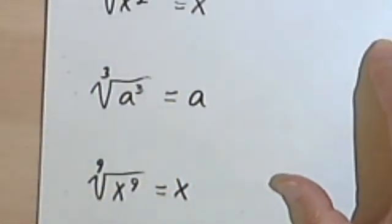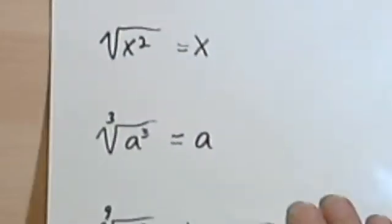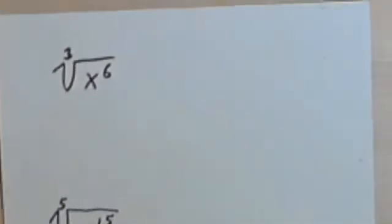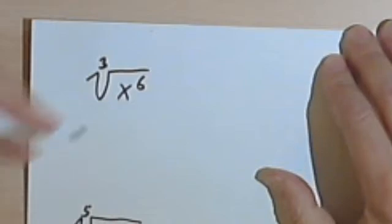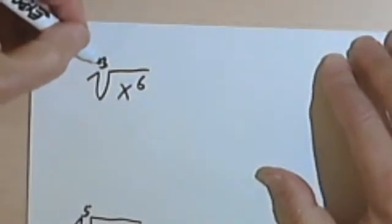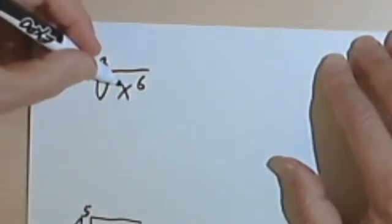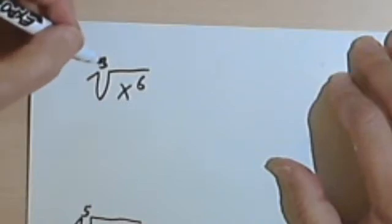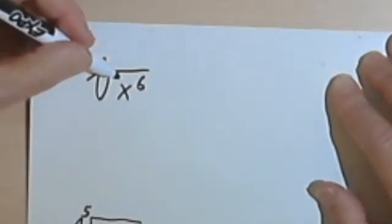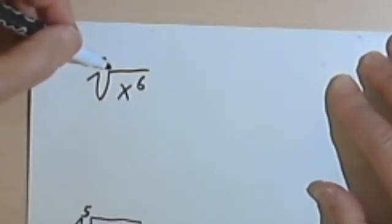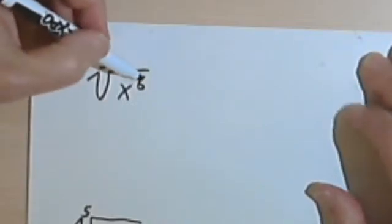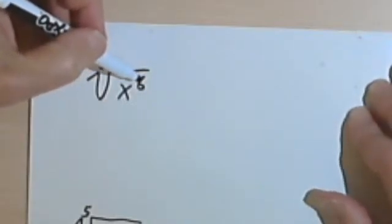So let's look at some more. A little bit more difficult, but really nothing to worry about. So here I've got the third root of x to the 6th. That means I'm looking for a number, a variable, that I can raise to the third power and get x to the sixth.